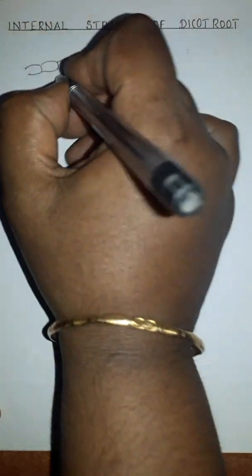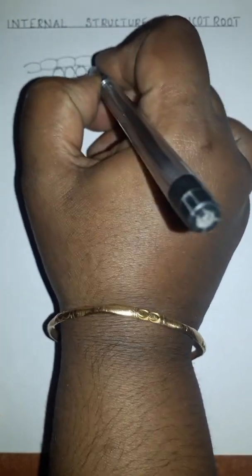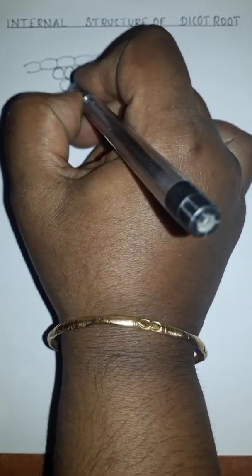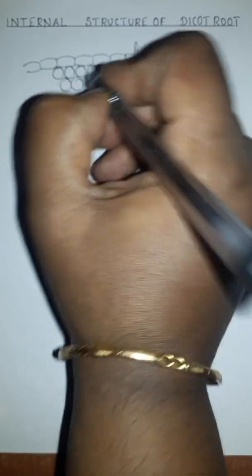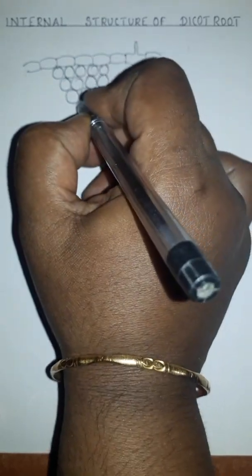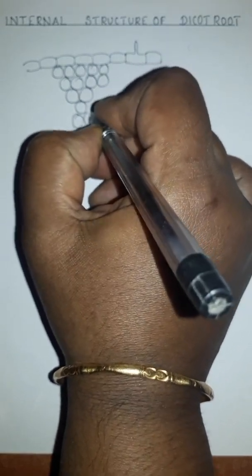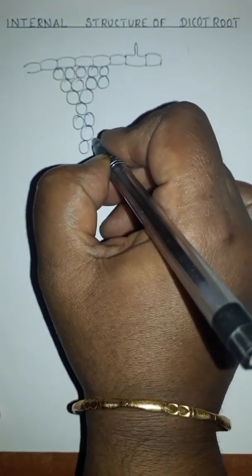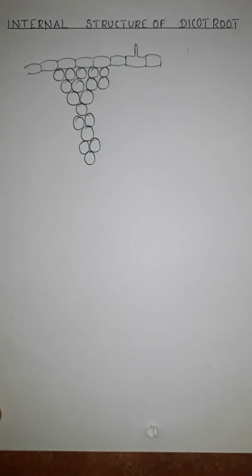Below the epidermis we will see the cortex region. This cortex is parenchymatous in nature. Parenchyma cells are either circular, oval, or polygonal in shape. You can draw the full cortex region.